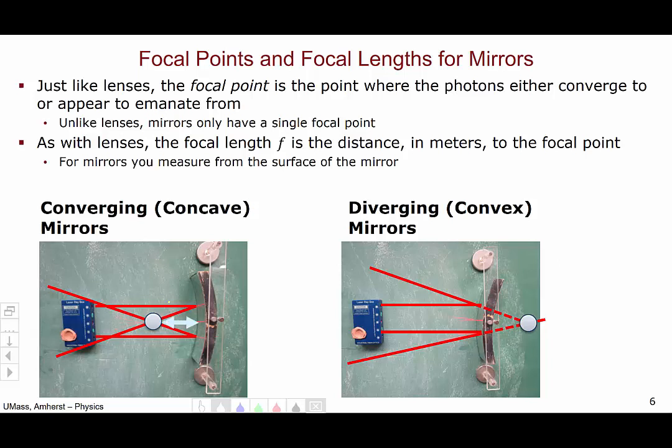For the converging lens on the left, this blue arrow represents the focal length f, and for the diverging mirror, we have this focal length on the right.